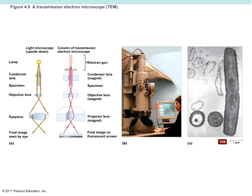One drawback of the electron microscope is that we have to kill our specimen. The other drawback is that they're expensive — on the bargain basement end, probably around $10,000 for the least expensive electron microscope, and the price skyrockets from there.